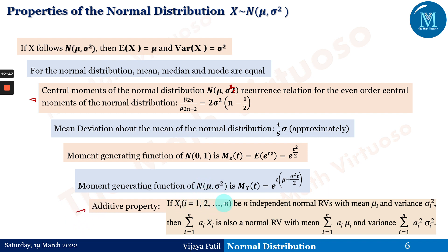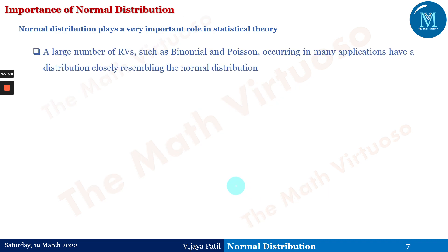Additive property: if Xᵢ (i = 1 to n) are independent normal random variables with means μᵢ and variances σᵢ², then the linear combination Σ aᵢXᵢ is also a normal random variable with mean Σ aᵢμᵢ and variance Σ aᵢ²σᵢ². We will solve different types of questions based on these properties.